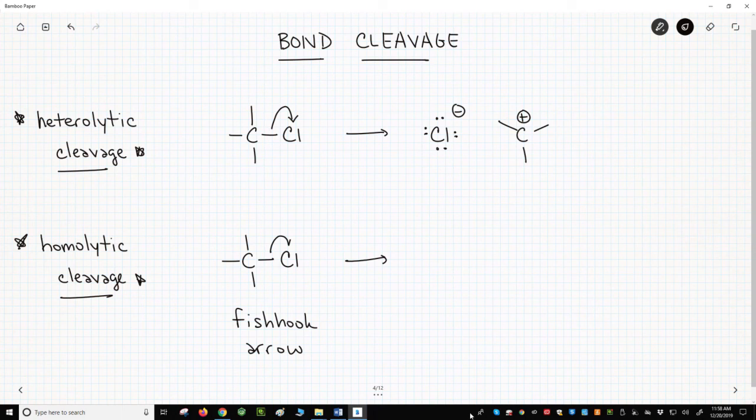As with all mechanistic arrows, we start the arrow where the electron is and point the arrow to where the electron is going. We move one electron to carbon and the other to chlorine.